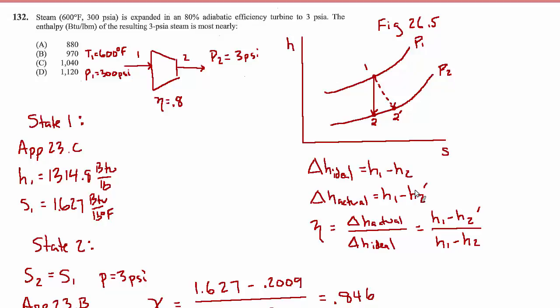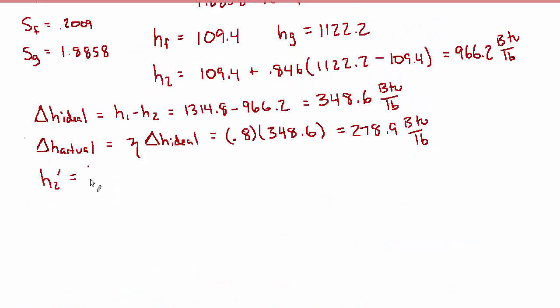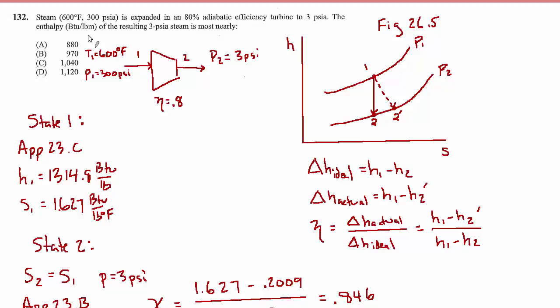Now we can use the relationship between delta h actual, h1, and h2 prime. h2 prime is equal to h1 minus delta h actual, so that's 1314.8 minus 278.9, which equals 1036 BTU per pound. That matches up with answer choice C.